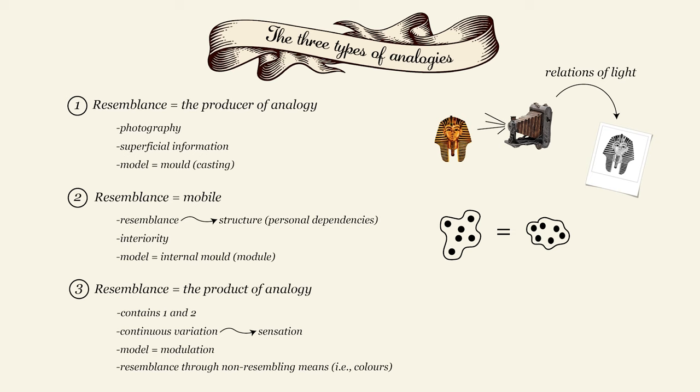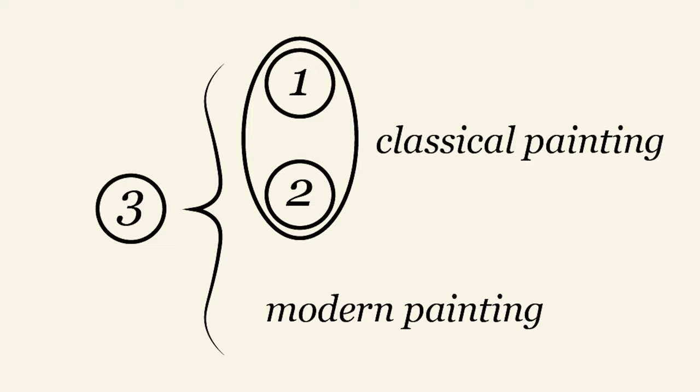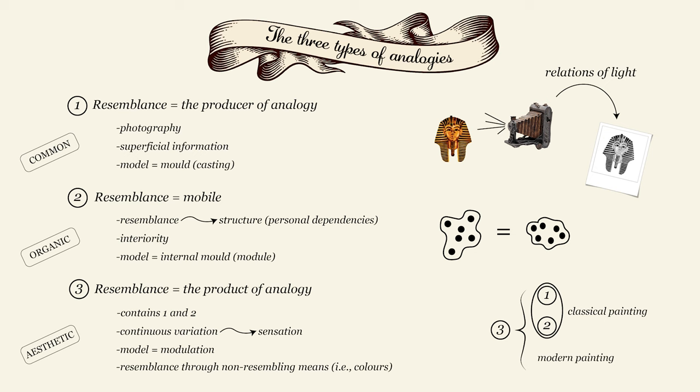With this concept of analogy, Deleuze manages to cover all types of painting from classical to modern. He names these three analogies as follows: common, organic, and aesthetic. The aesthetic analogy comprises the other two because it can produce states of affairs as well as relations of personal dependency. As a modulation, it can mould and it can modulate. But it also raises a big problem. If modulation is internal to the painting, emphasising relations of colours over relations of light, Deleuze needs to find a theory of colours that can actually account for the movement of time implied in modulation.